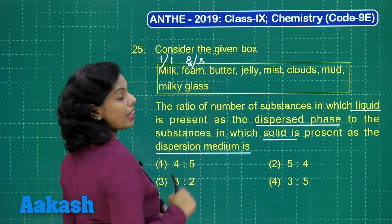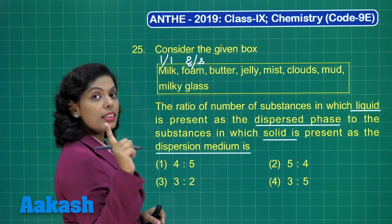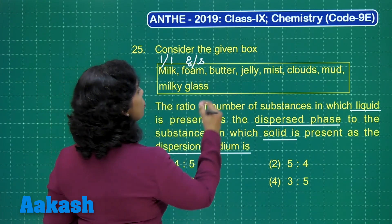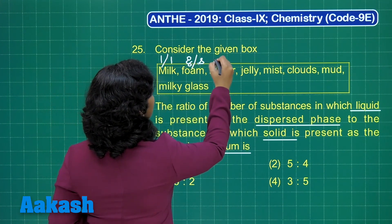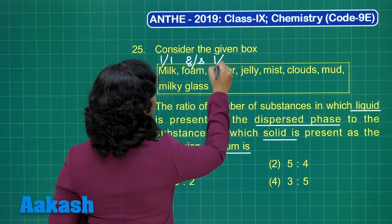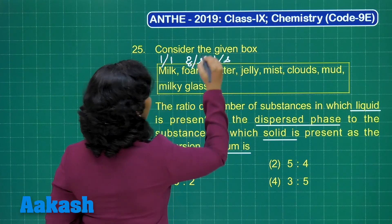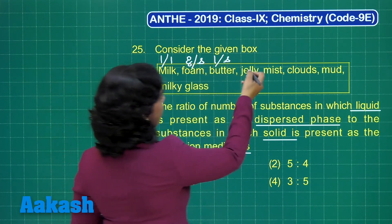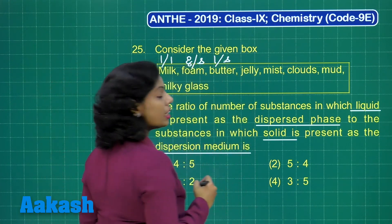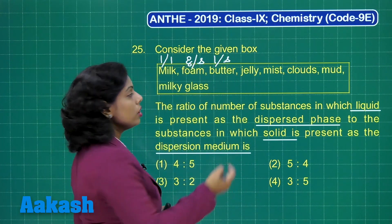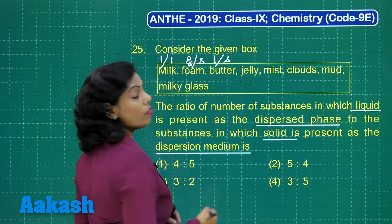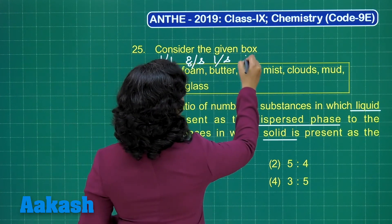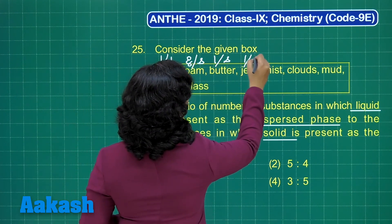Further, butter is there and butter is a gel. In the case of a gel, liquid is always present in solid. After that we have jelly, which is also a kind of gel, so once again liquid is in solid.